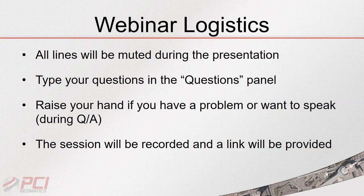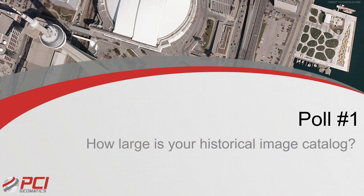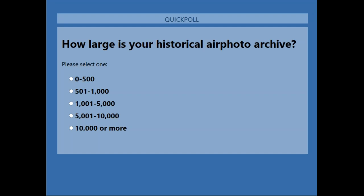Presumably if you're here, you're in possession of a historical air photo archive or would like to create one. How large is your historical air photo collection? We've seen all different sizes depending on whether you're working at a city, county, provincial, or federal level. For a city-level survey — say Ottawa or Toronto at 1:15,000 scale — you're looking at roughly 200 photos to cover the entire city.